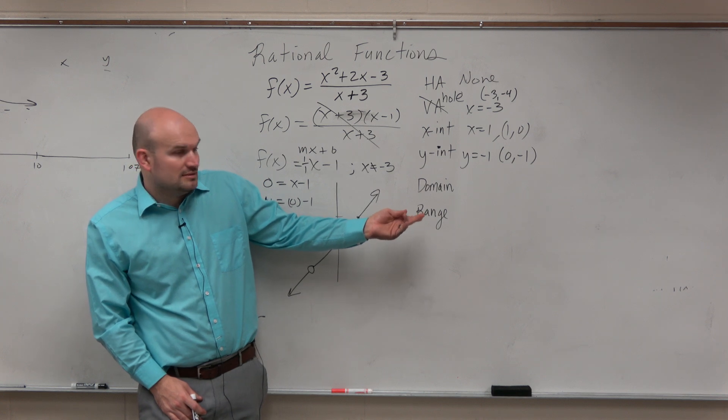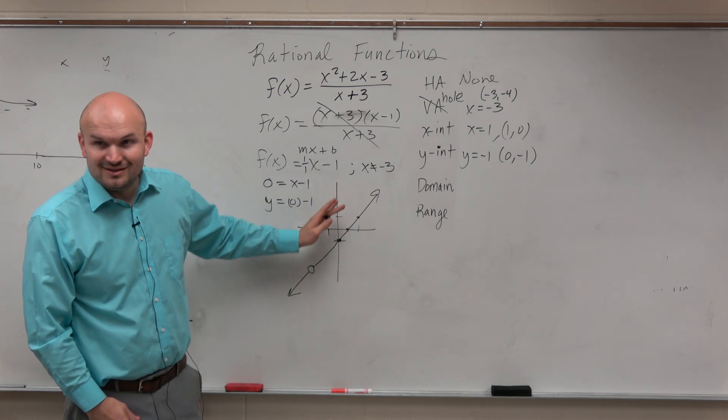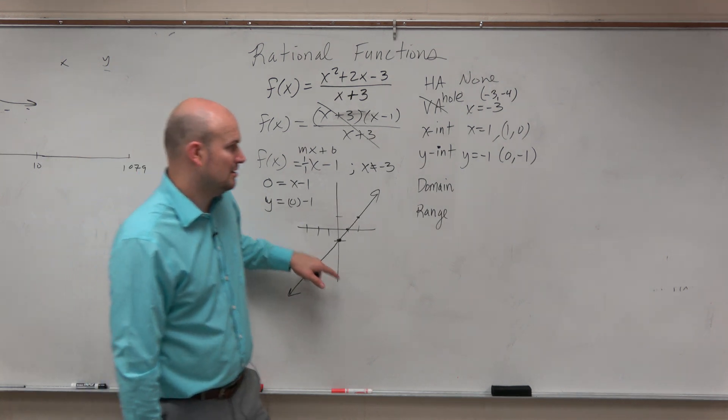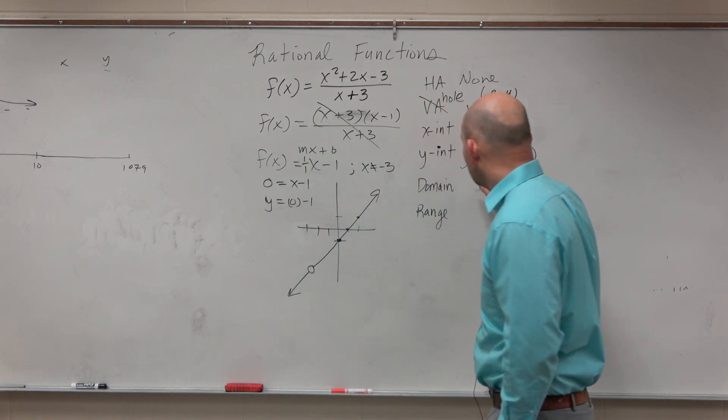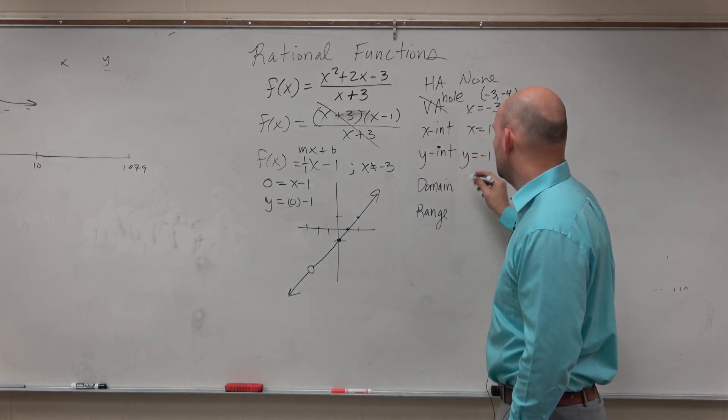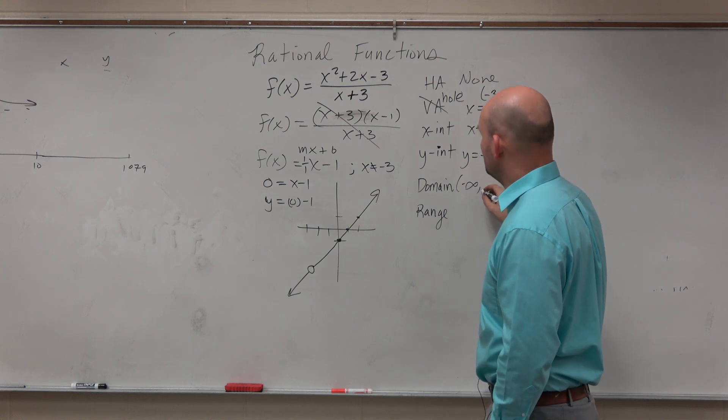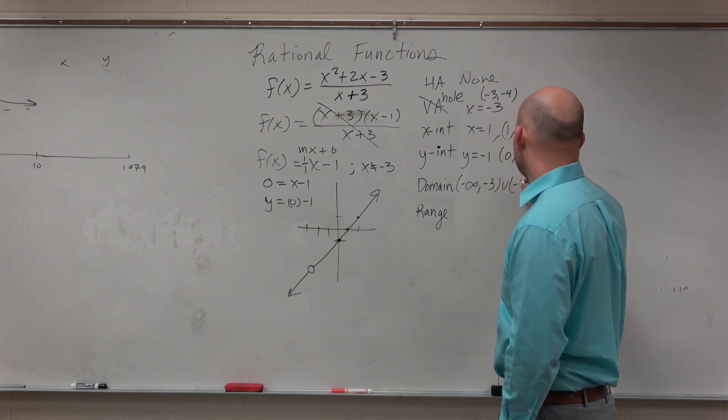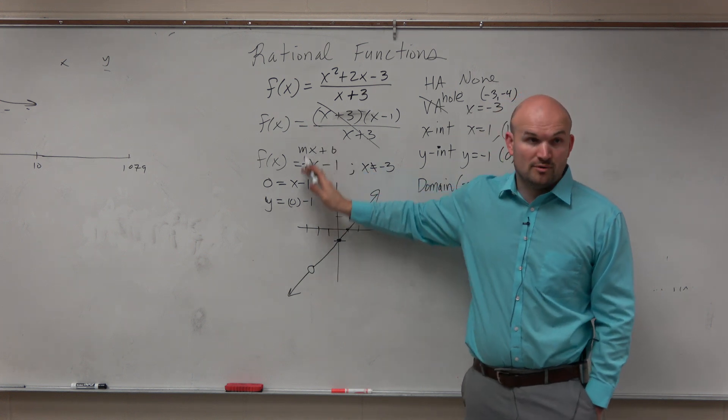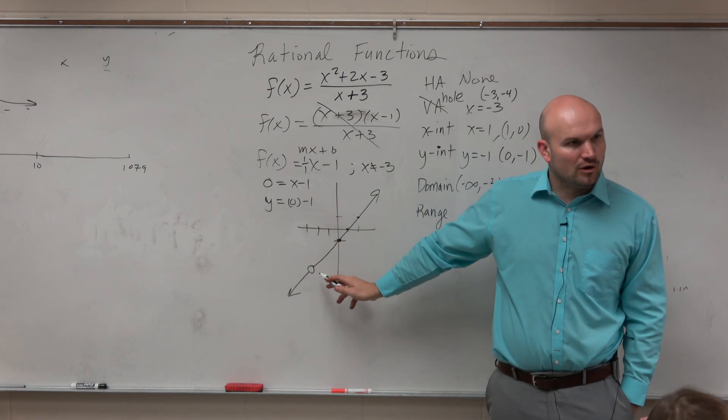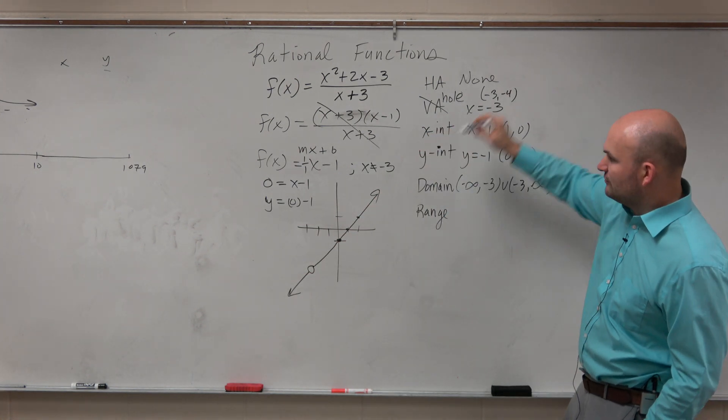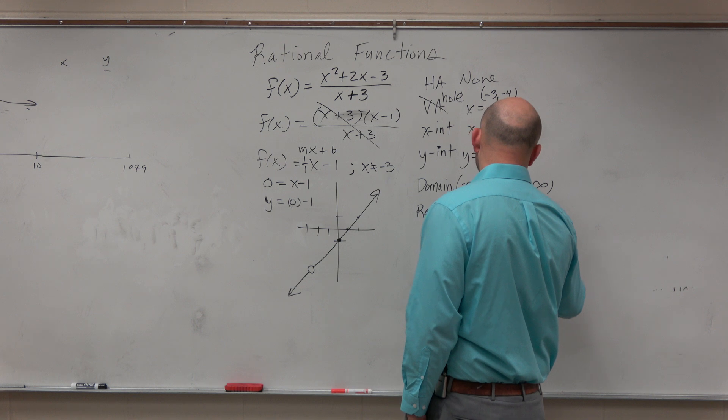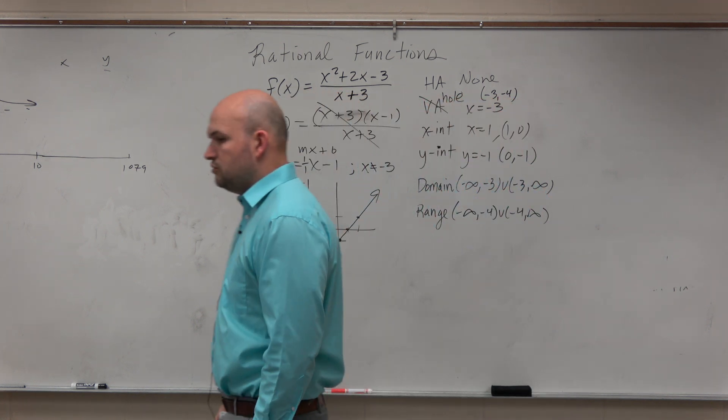The domain. Guys, this is a line, right? A line, all real numbers. Ah, but we have that hole. So it's everything except for the hole. So the domain is from negative infinity to the hole, which occurs at negative 3, union, and then negative 3 to infinity. The range is all real numbers except for that dang hole. And what was the y-coordinate we said? Negative 4, right? Because if you just plug in negative 3, you get negative 4. So the range is from negative infinity to negative 4, union negative 4 to infinity.